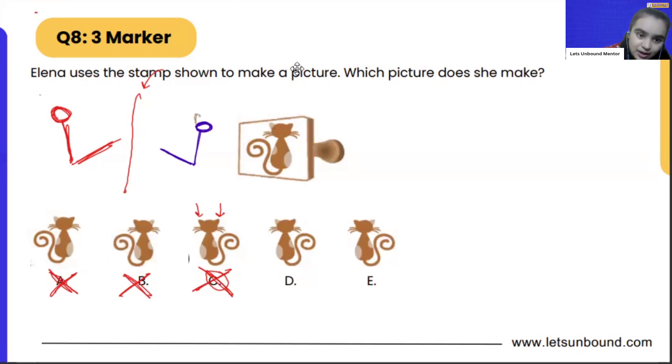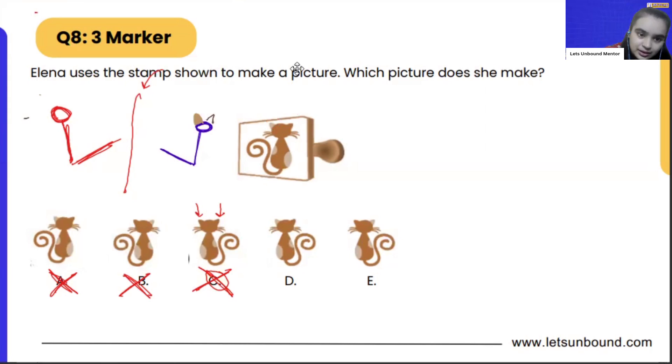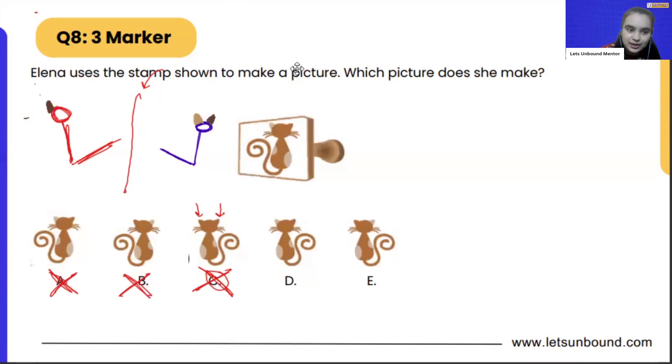Whereas in the stamp we are having one ear which is in light brown color, the skin color, right? So that means option C is also wrong. Now if you will see carefully, this is how the cat is having its ears: the light brown color here and then the dark brown color. Now if we are going to make the mirror image of it, what will happen?